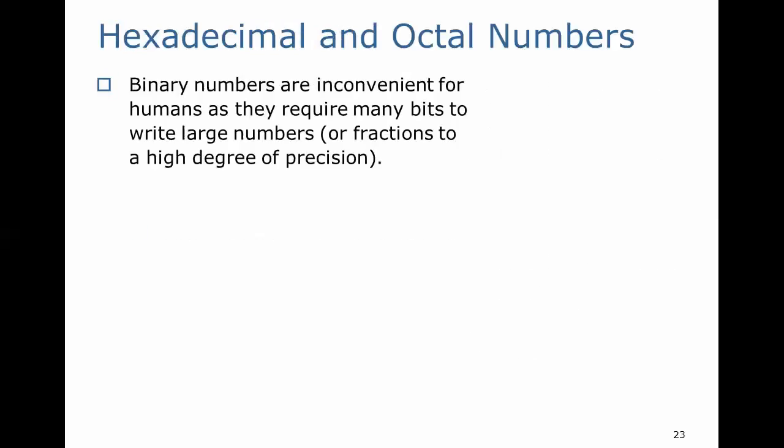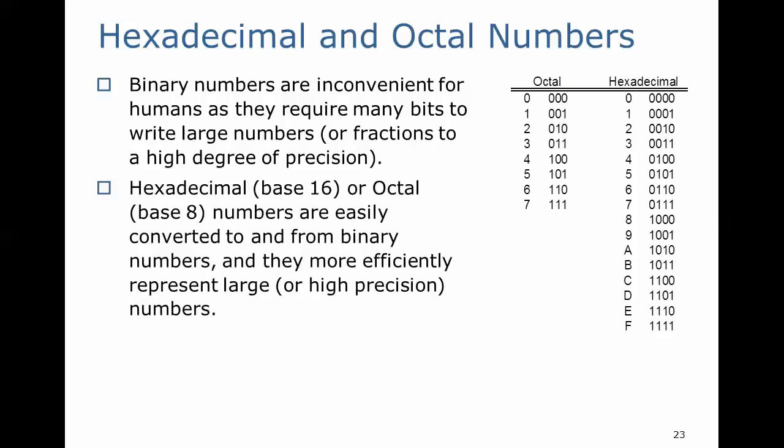Binary numbers are inconvenient for humans, as they require many bits to write large numbers or fractions to a high degree of precision. So we're going to use hexadecimal, or base 16, or octal, base 8 numbers, to help us out. We use base 16 and base 8 because they can easily be converted to and from binary format just by inspection.